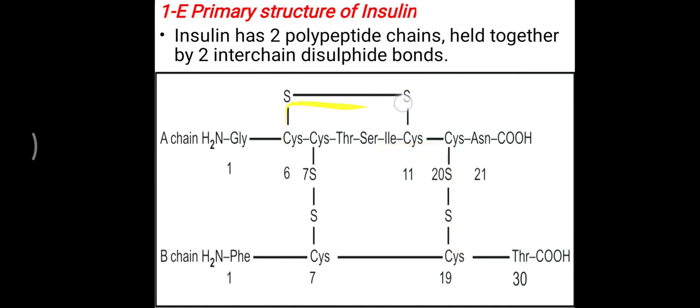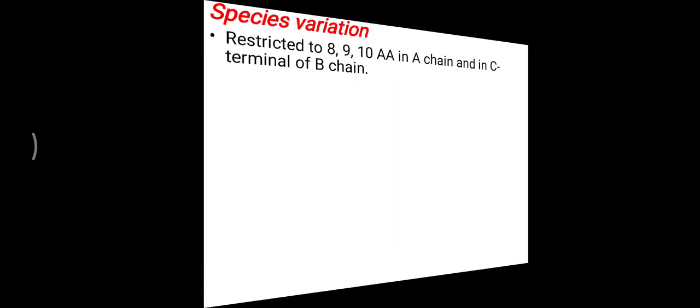There is also an intra-chain disulfide bond inside the A chain — between the 6th and 11th amino acids — and this shows the primary structure of insulin.